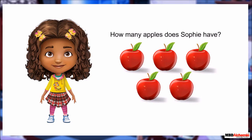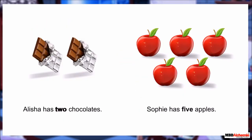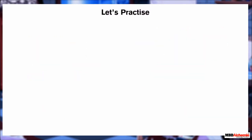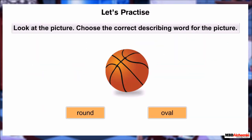How many chocolates does Alicia have? That's correct — Alicia has two chocolates. How many apples does Sophie have? You are again correct — Sophie has five apples. The words 'two' and 'five' tell us how many chocolates and apples there are; they tell us the number of things. Let's practice: look at the picture and choose the correct describing word for the picture.